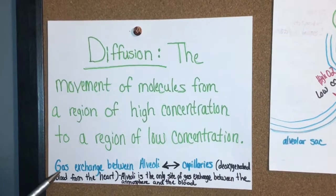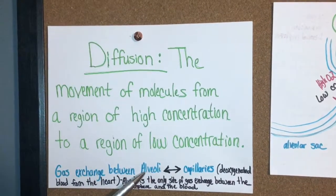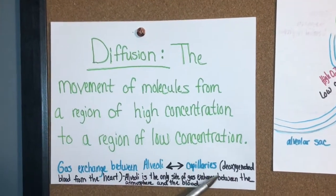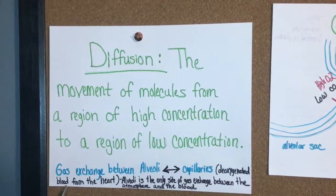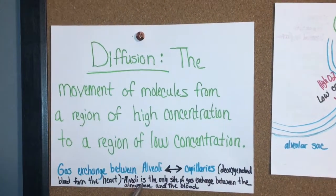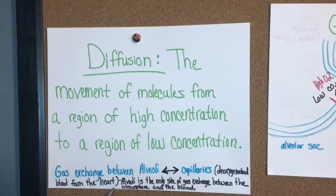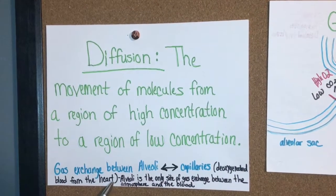First we're going to talk about gas exchange between the alveoli and the capillaries. The capillaries have deoxygenated blood from the heart. The alveoli is the only site of gas exchange between the atmosphere and the blood.